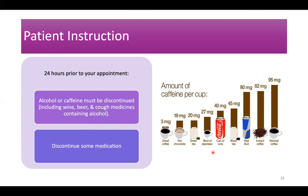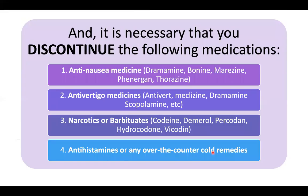Ethanol, if recent — meaning less than 12 hours — can cause positional nystagmus, which we call alcohol-induced nystagmus. The medications necessary to stop 24 hours prior are: anti-nausea medicine, antivertical medicine, narcotics, antihistamines, and any over-the-counter cold remedies. Based on a 1987 study, I also ask the patient to stop nicotine at least 8 to 10 hours prior to testing, as it may cause upbeating nystagmus as recorded in different studies.